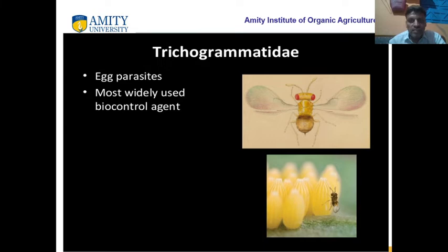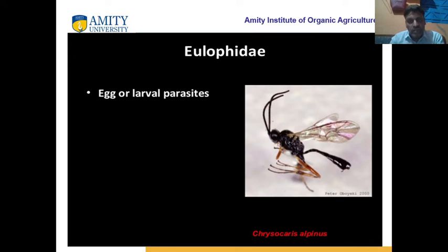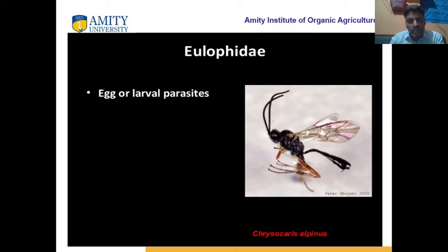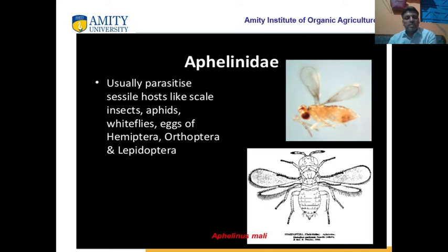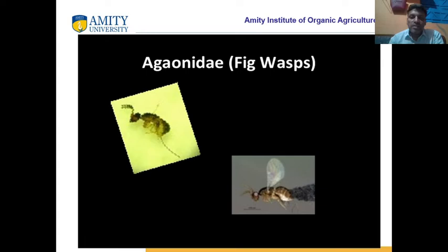Trichogrammatidae are egg parasites and are the most widely used as biocontrol agents. They are egg or larval parasites, including Chrysocharis and Pnigalio species. Aphelinidae are parasites of insects like aphids, whiteflies, eggs of Hemiptera, Orthoptera, and Lepidoptera. So we find that the hymenopterans are parasites of many other insect groups.